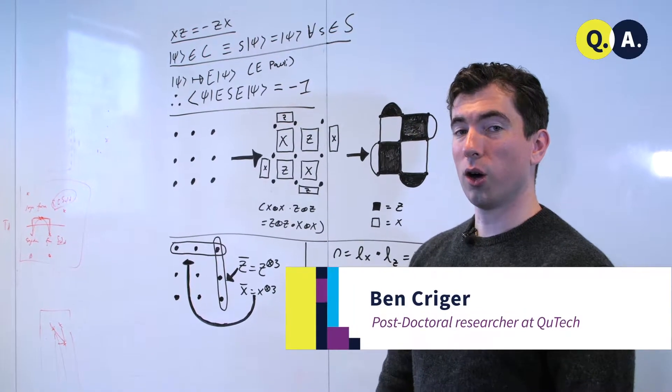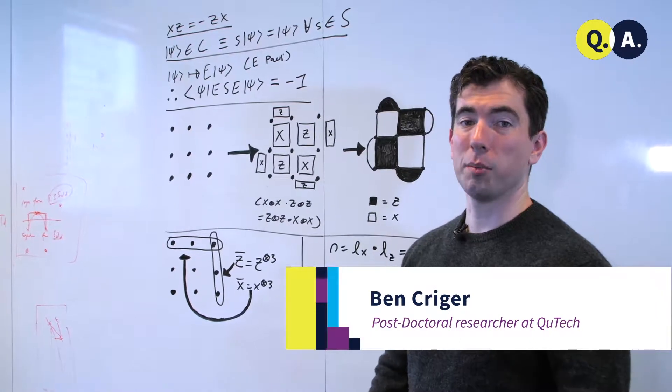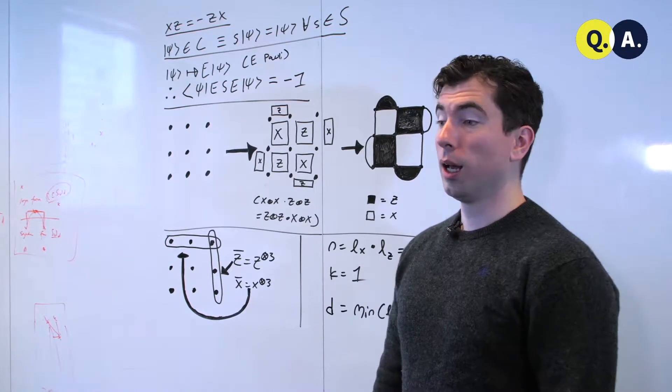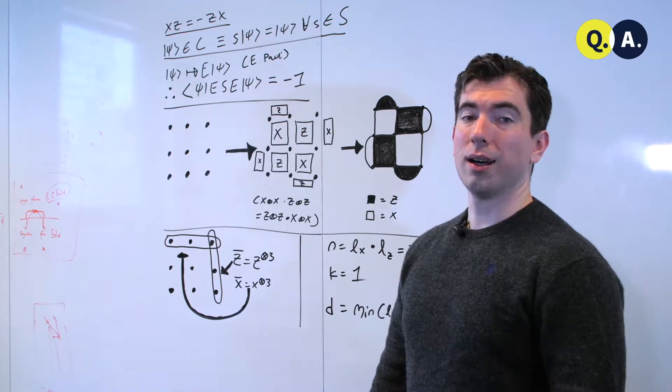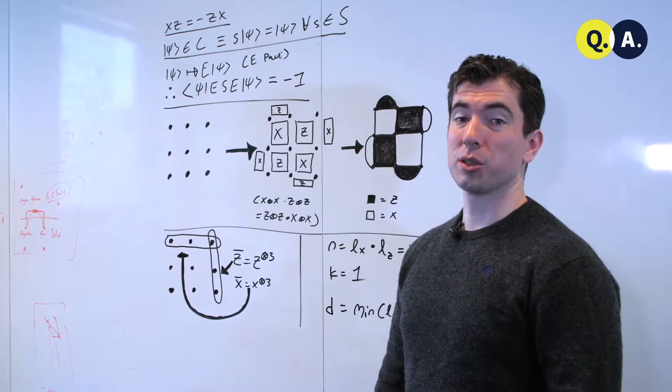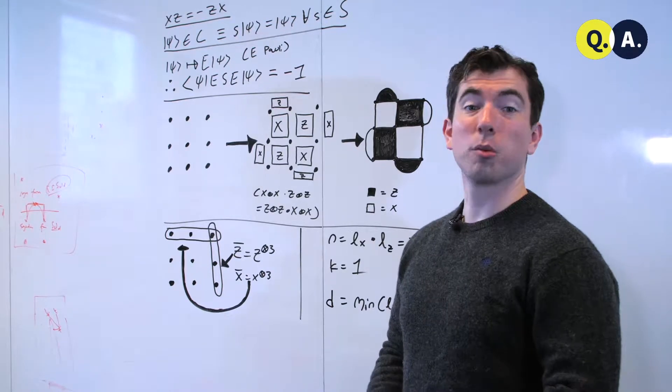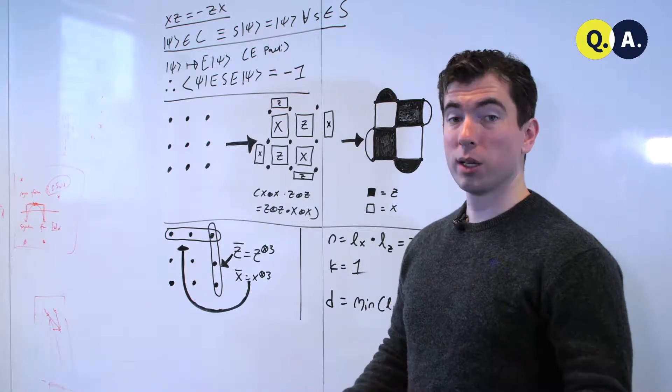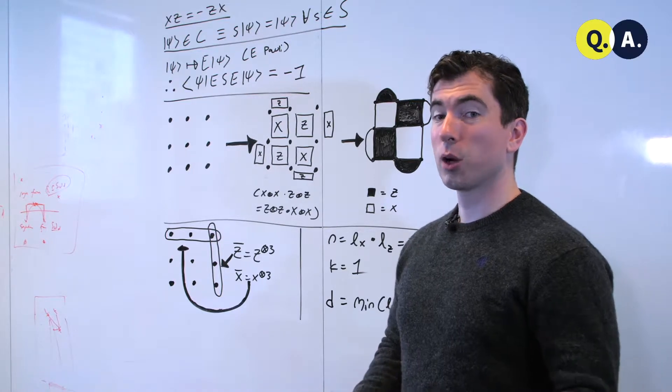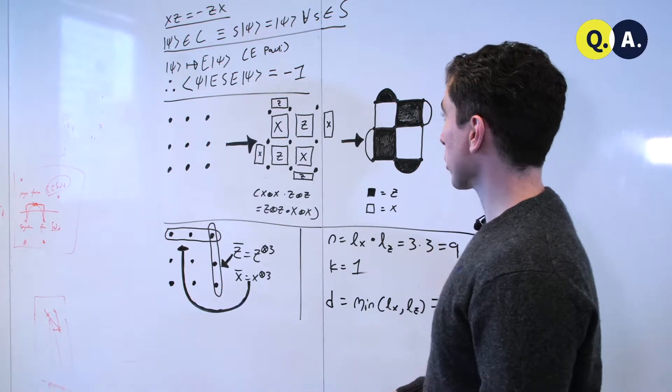Researchers in quantum information often use a simplified diagram in order to talk about surface codes. It can be a little bit difficult for people who are beginners in the field to know exactly what's being discussed in terms of the number of physical qubits, number of logical qubits, and the distance of a surface code given the diagram alone. So we're going to go over the calculation method quickly, just to see how everything works.